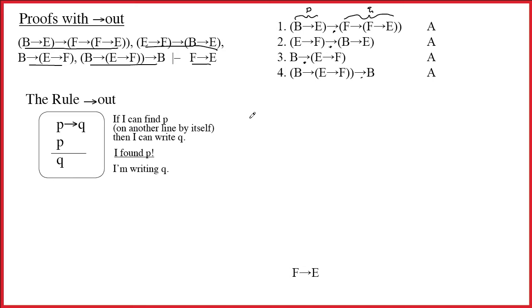Now sometimes people start getting nervous at this point, but really you shouldn't. Let's talk about four. The third arrow is the main connective. That means everything in front is P, and then B by itself is Q. And what do we say? If I can find B arrow E arrow F on another line by itself, then I can write B. Do I find B arrow E arrow F on another line by itself? And this time, the answer is finally yes, I do. B arrow E arrow F. Well, that's exactly what's on line three.